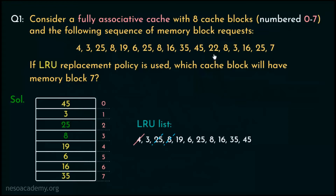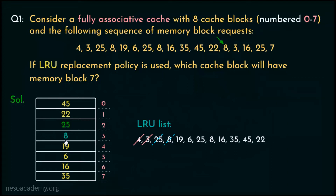For block request number 22, the cache is again full. From our LRU list, block number 3 is now the least recently used block, so block 3 is selected for eviction, making space for block 22. Block 22 is placed inside line number 1 and added at the end of our LRU list as the most recently used. Block request number 8 results in another cache hit since 8 is already present, but we update our LRU list because 8 is now the most recently used, so 8 is added at the end.